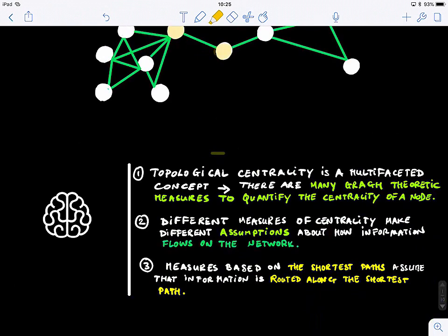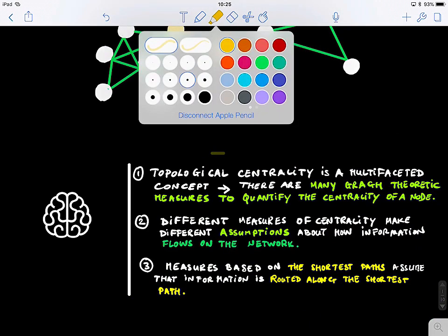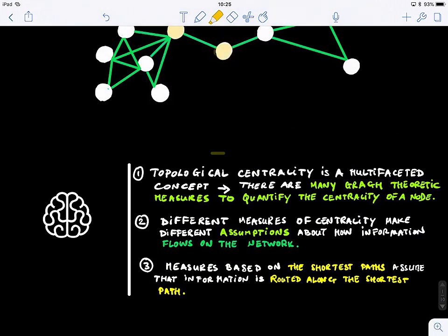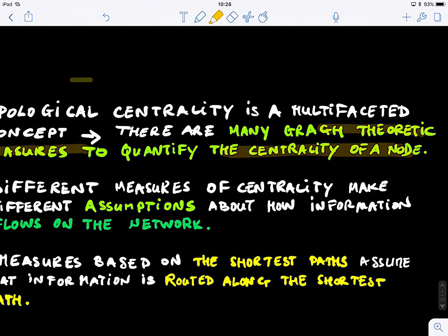So just to recap, we saw that topological centrality is a multifaceted concept, which means there are many measures that we can use to quantify the centrality of a node. And also we saw that we can quantify the centrality of an edge. For closeness centrality or betweenness centrality, we can compute the centrality of an edge. So for some centrality measures, they can be easily generalized to edges.